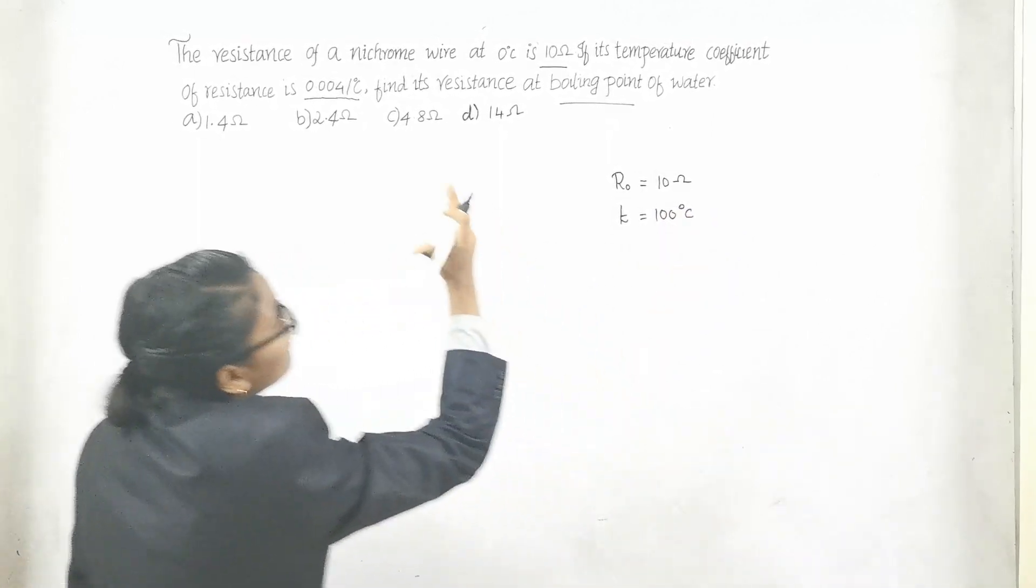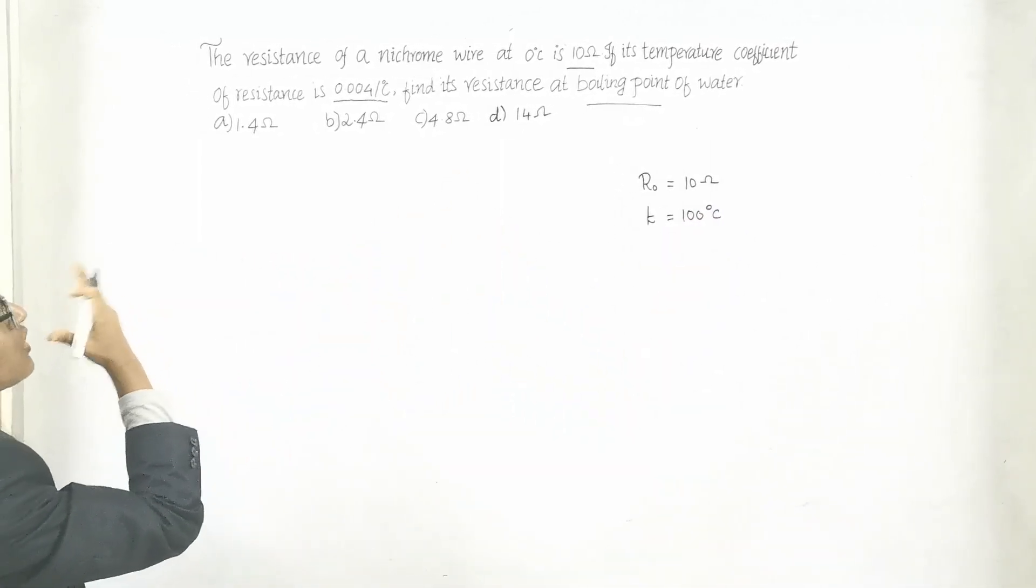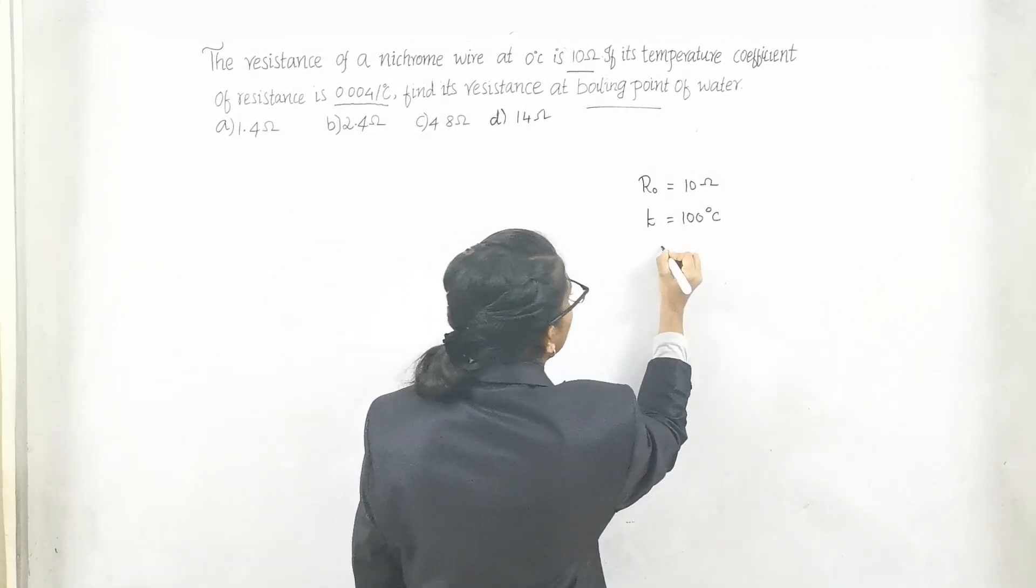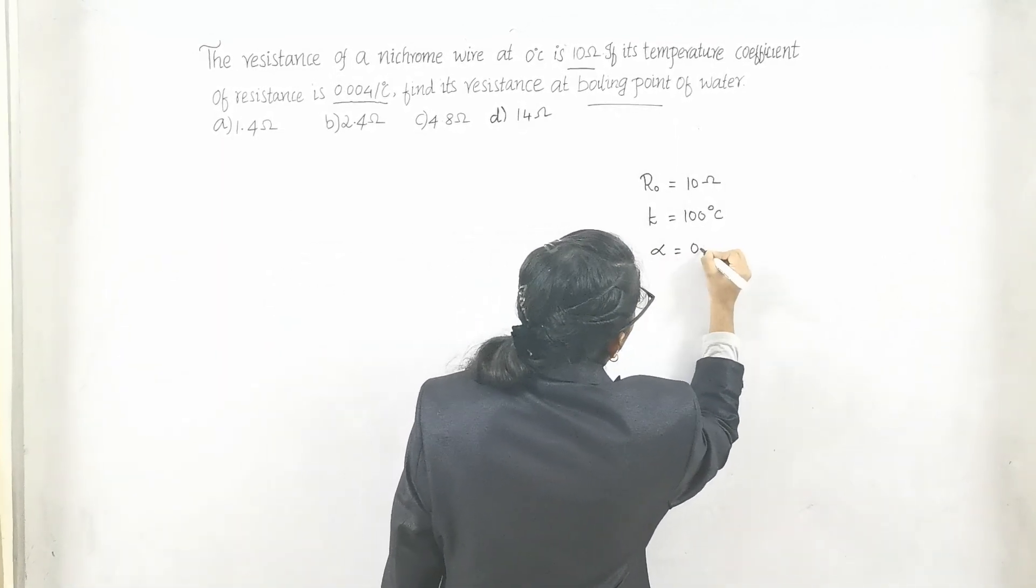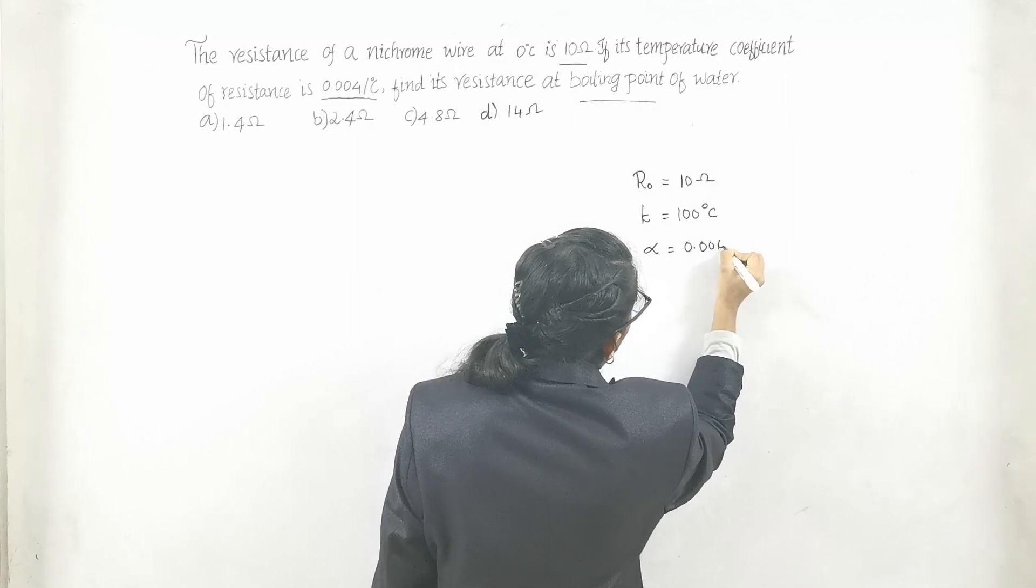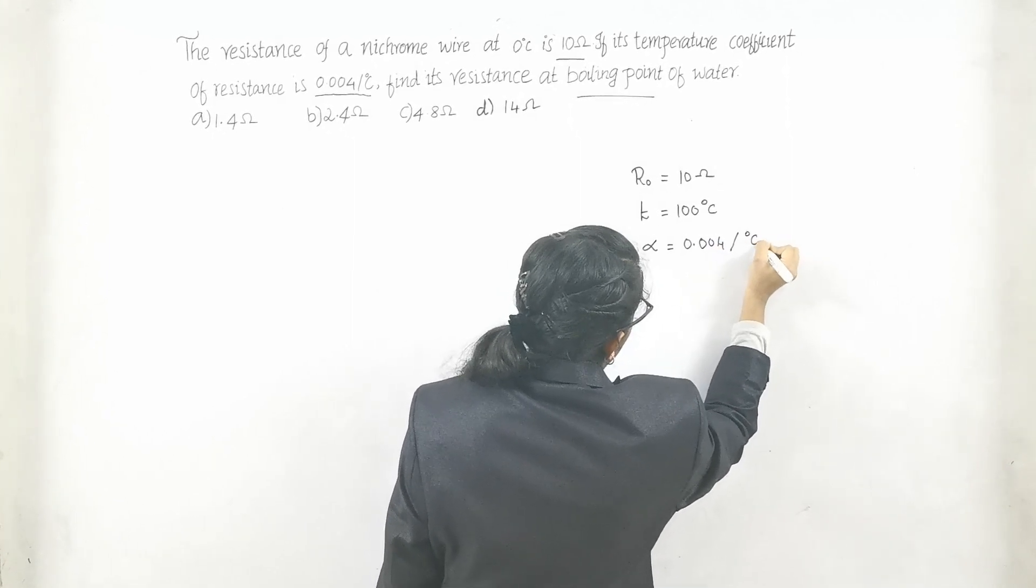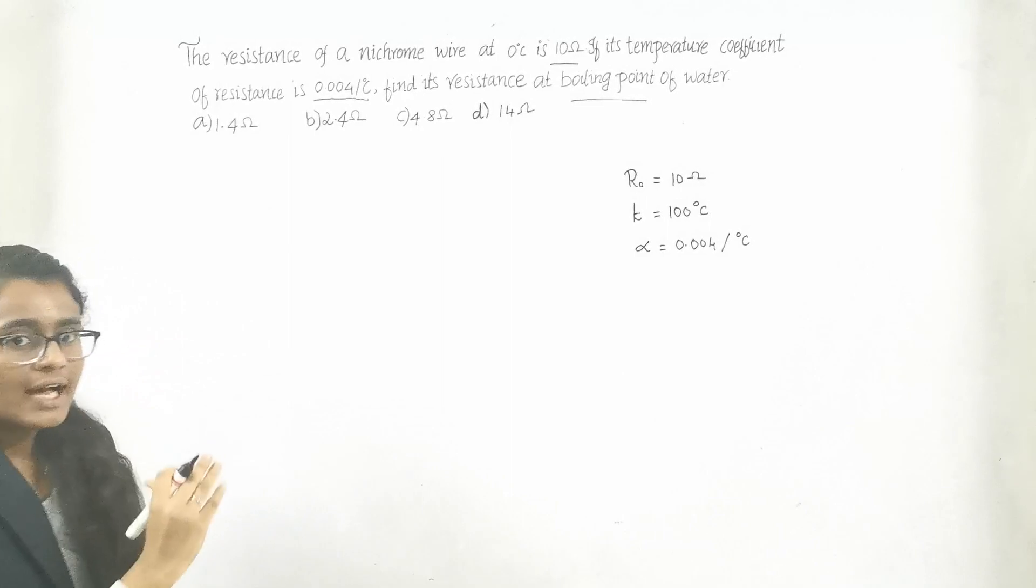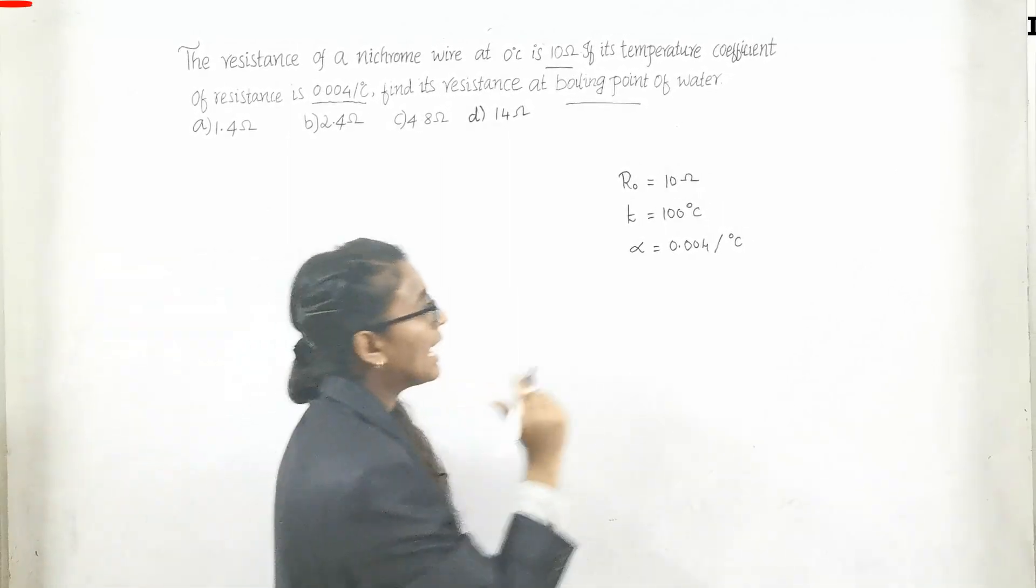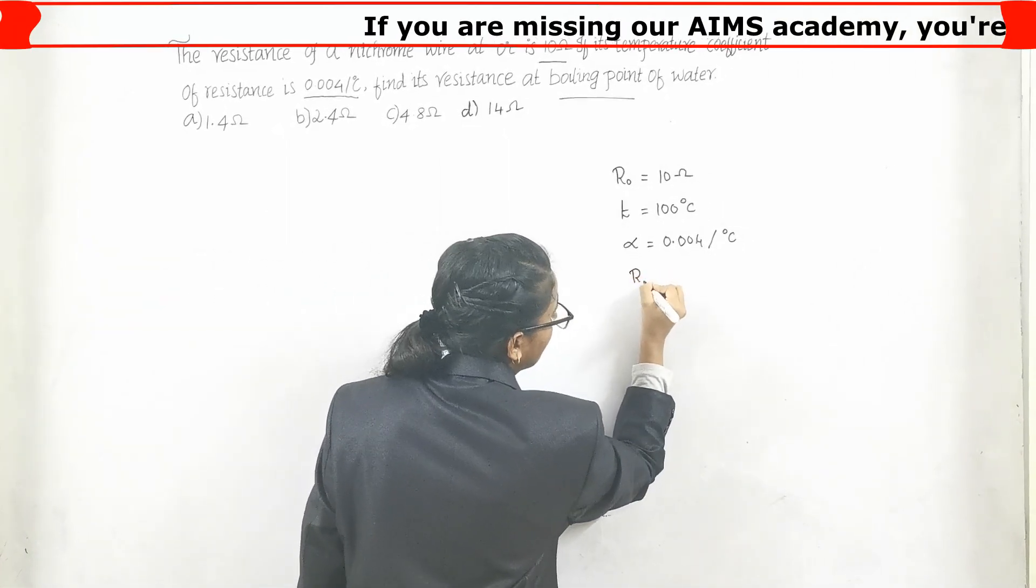And they have given temperature coefficient of resistance, that is alpha, α is 0.004 per degree Celsius. Now we have to find R_T, that is RT.